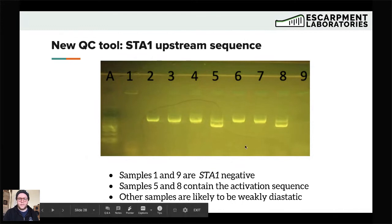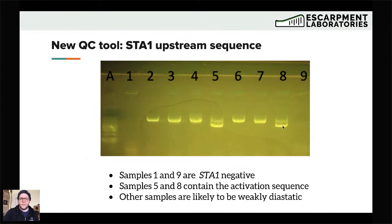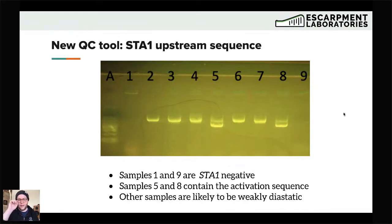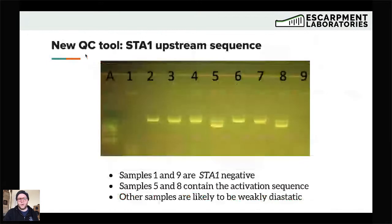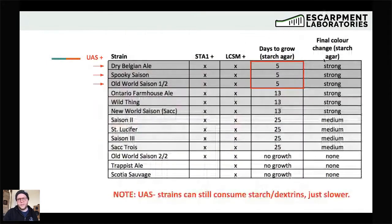In this experiment, samples one and nine are STA1-negative. Samples five and eight have that lower band — meaning they contain the upstream activation sequence, so those are going to be the highly diastatic strains. The others are likely to be weakly diastatic because they don't have that upstream sequence. We were able to correlate that to our house list of diastatic strains. Surely enough, the strains with that intact upstream sequence — the lower band — were the three strains that are the fastest growing on the starch agar and have the most capacity for starch degradation.